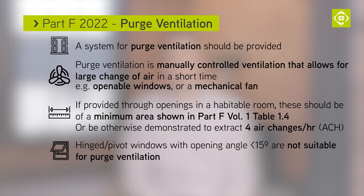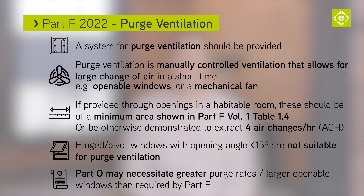Hinged or pivot windows with an opening angle of less than 15 degrees are not suitable for purge ventilation. Reference is also made to Part O of the building regulations, which is likely to require higher purge ventilation rates and larger opening windows than detailed within Table 1.4.